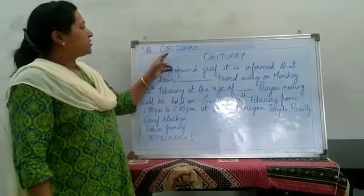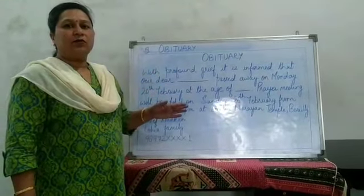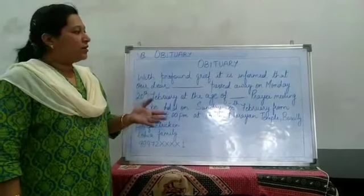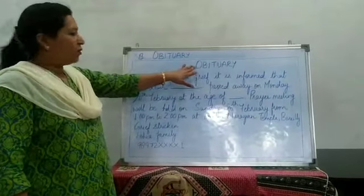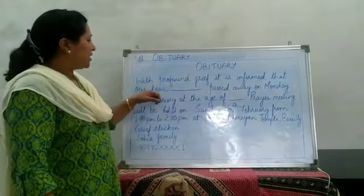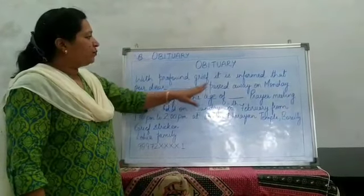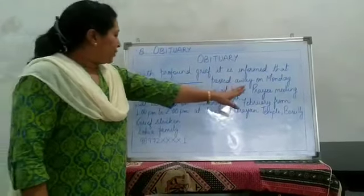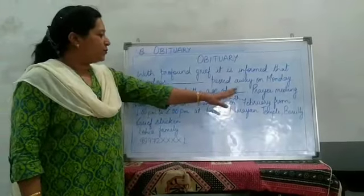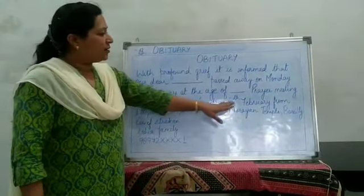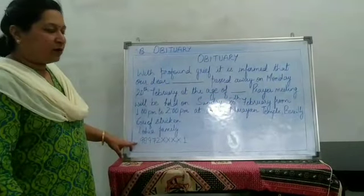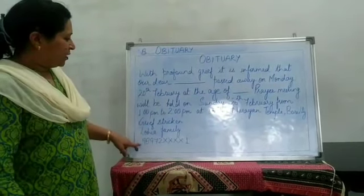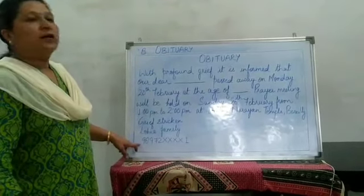After Matrimonial, the next example is Obituary. An obituary is given in the newspaper when somebody in the family has passed away and a religious ceremony related to the death is conducted. The heading is 'Obituary': 'With profound grief, it is informed that our dear [name] passed away on Monday, 28th February, at the age of [age].' A prayer meeting will be held on Sunday, 26th February, from 1 PM to 2 PM at Lakshmi Narayan Temple, Bari. The grief-stricken family contact — Roheja family — and a phone number are given in the advertisement.